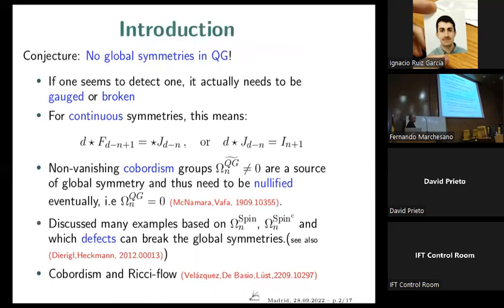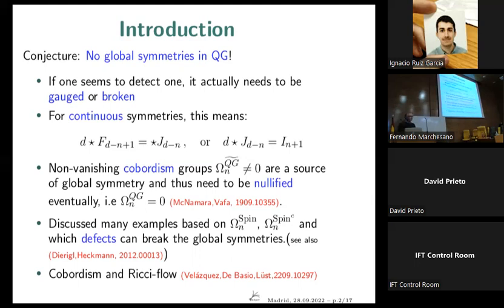We have heard a couple of times already about the famous cobordism conjecture: there are no global symmetries in quantum gravity. So if we are in a situation where we seem to detect one, we are not really in quantum gravity yet — we have to do something. It either needs to be gauged or broken. For continuous symmetries, the current can either be written as a total derivative of some gauge field, or the current is not preserved. Non-vanishing cobordism groups are a source of such global symmetries, and thus need to be nullified in a well-defined theory.